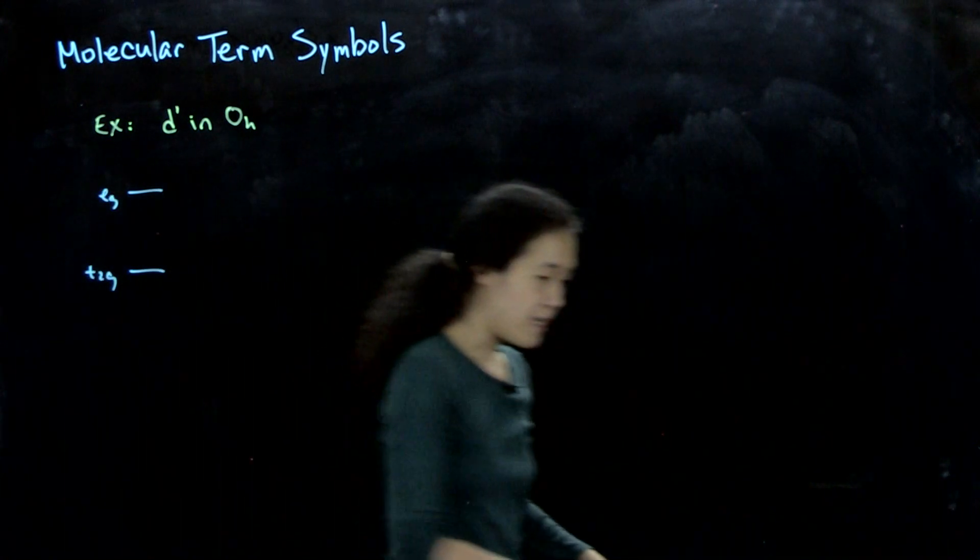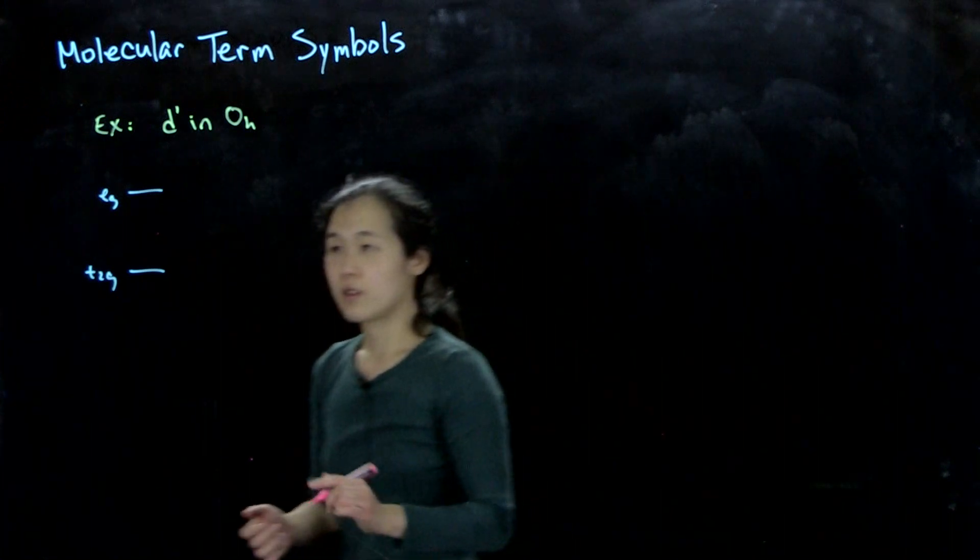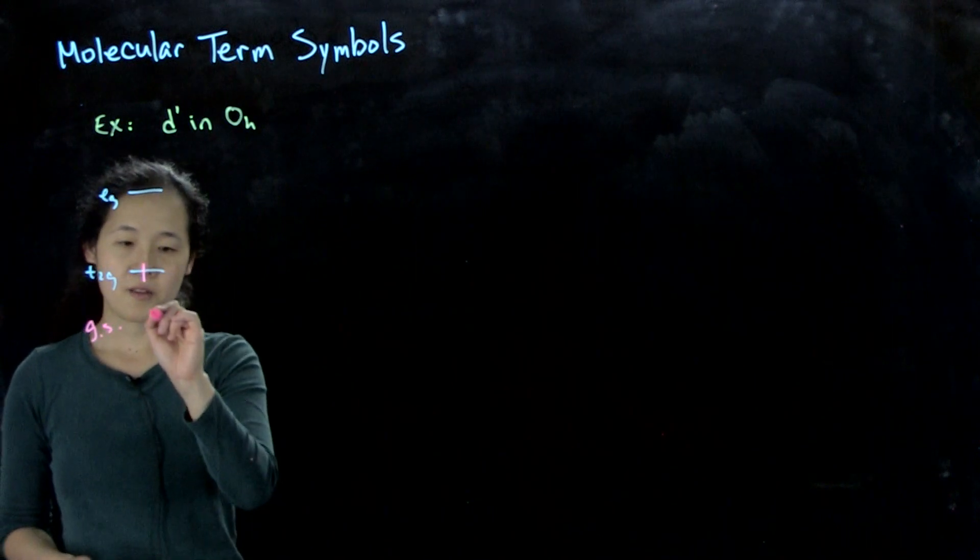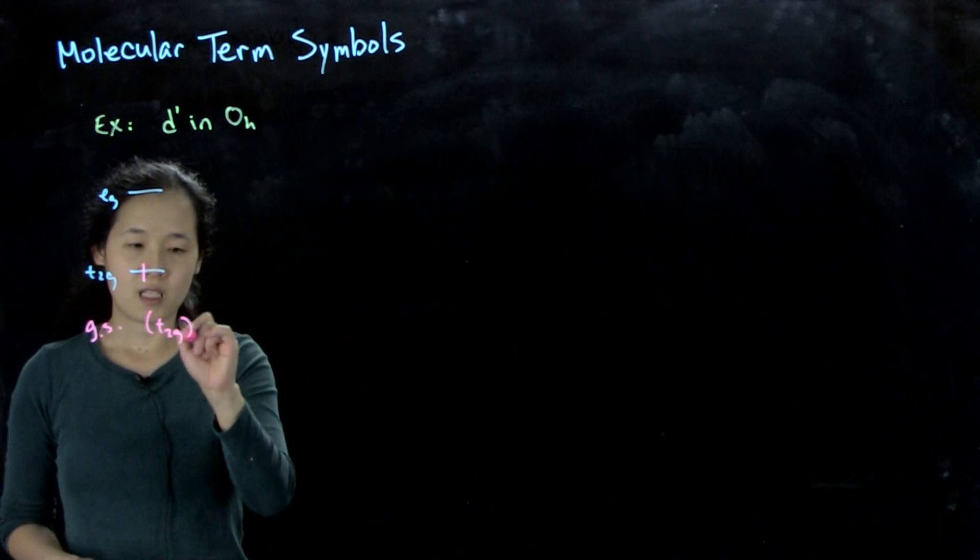So for the ground state, the electrons will be in the lowest orbital, so they've got to be here. So this will be our ground state, and this will be in t2g¹.